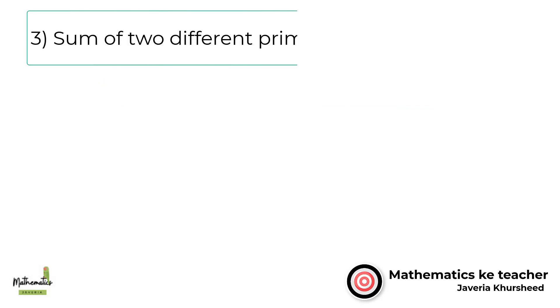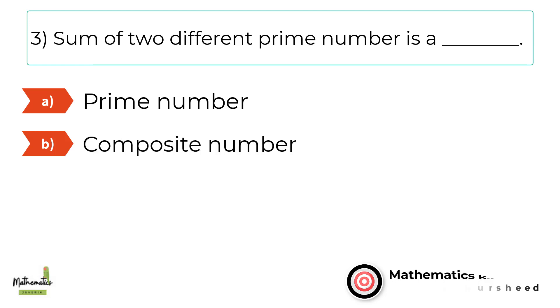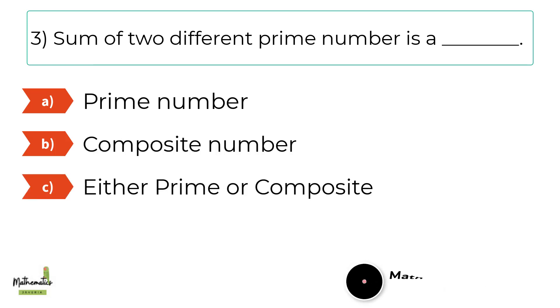Number 3. Sum of two different prime numbers is A, prime number. B, composite number. C, either prime or composite. D, none of these.